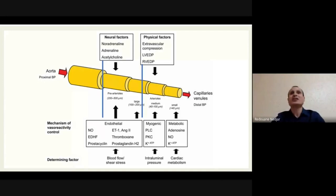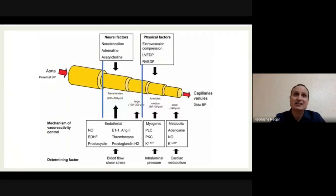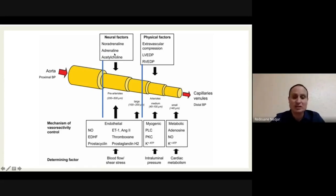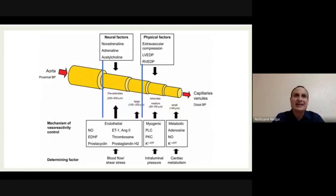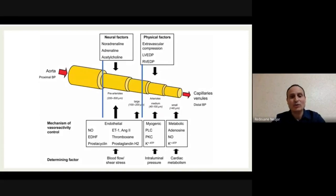Juste après, on a les artérioles précapillaires distales, vraiment avant les capillaires. C'est le siège de la régulation myogénique et métabolique, à travers l'adénosine et le monoxyde d'azote. Il faut garder en mémoire cette schématisation, car ensuite je présente comment on a classifié l'athérosclérose. Les artères épicardiques sont le siège de l'athérosclérose, qui peut être stable — aboutissant à une réduction de la lumière pour donner de l'ischémie chronique — ou avec des plaques vulnérables donnant des syndromes coronaires.